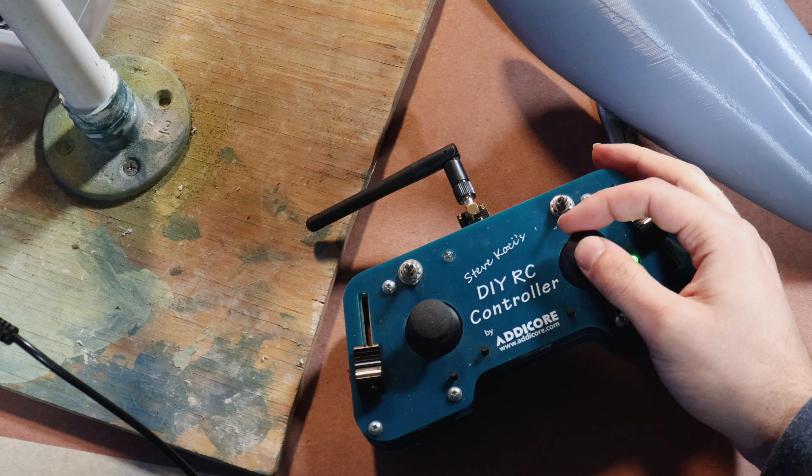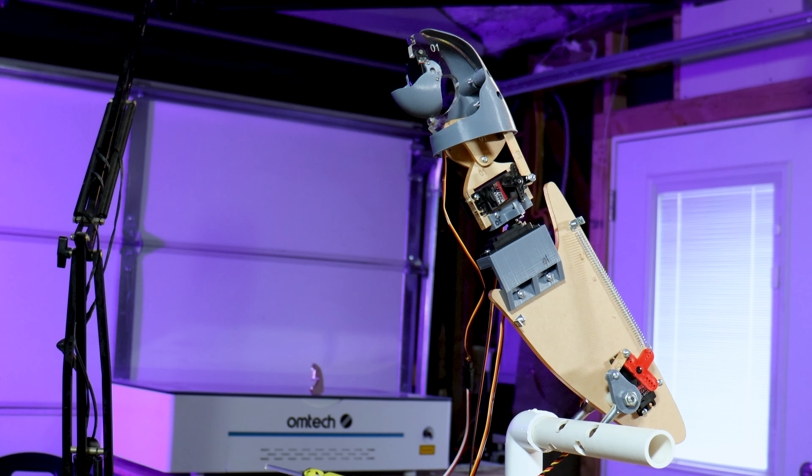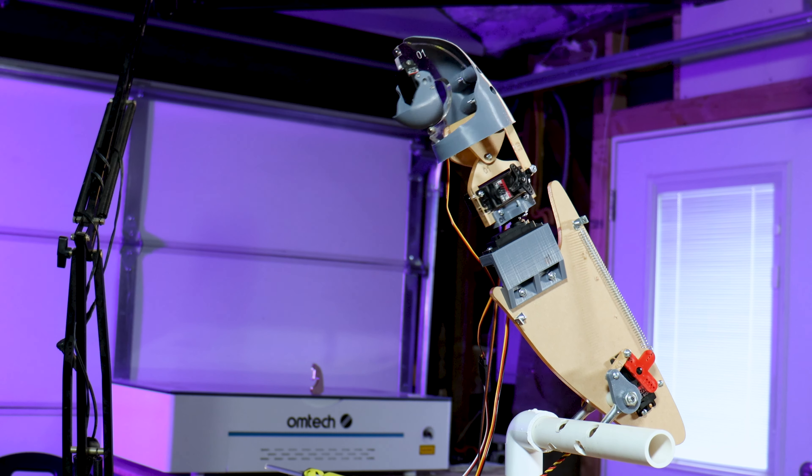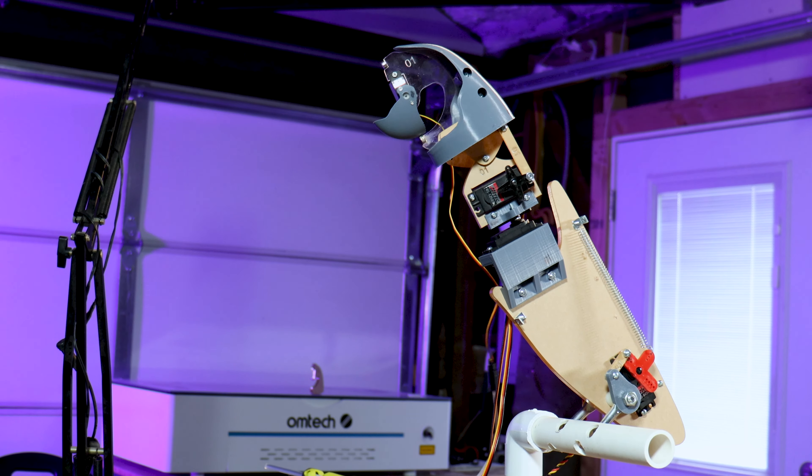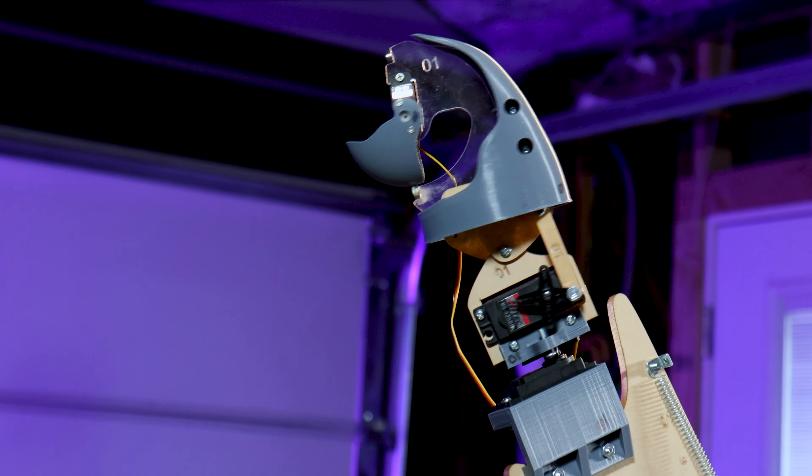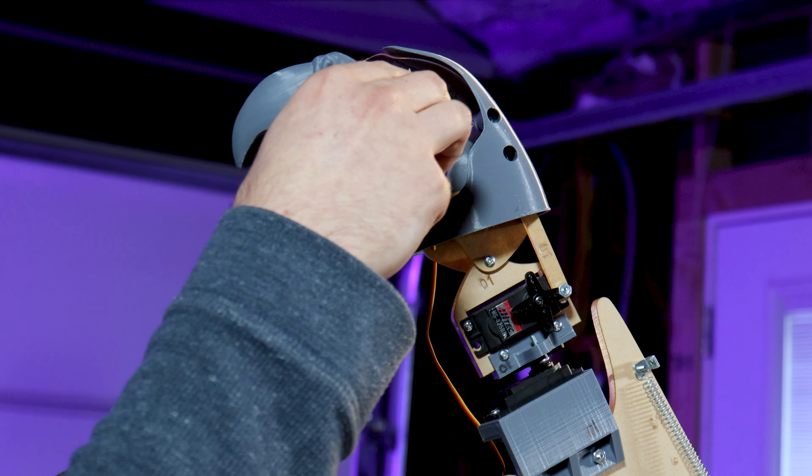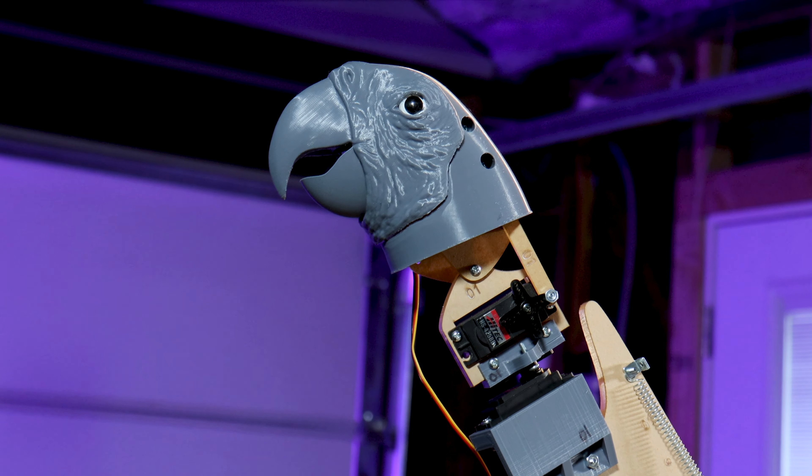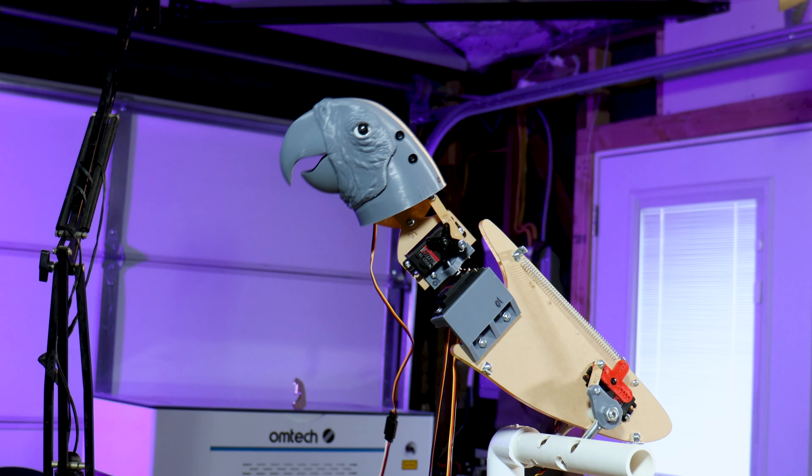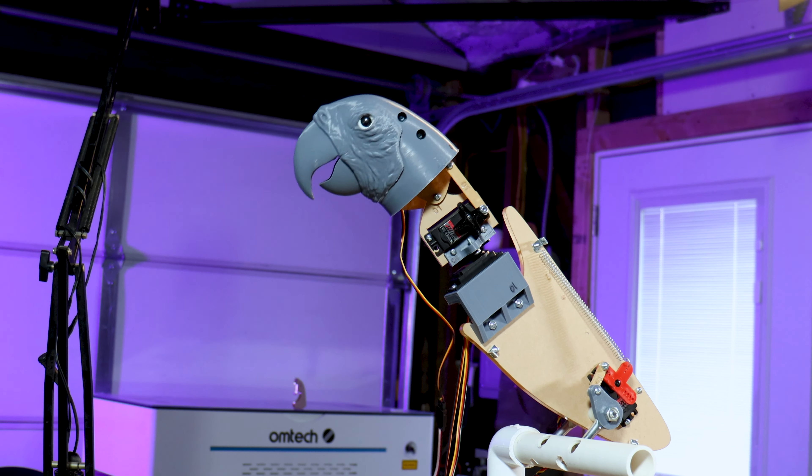I'm going to power this up and test it out with the Steve Kochi RC controller from Atacore. This is a great tool for hobbyist animatronics, and I'm going to talk about it more in a future video. But for now, this range of motion is looking pretty good. I'm going to put the face on it so you can see what that will look like. Now you can really see how the 3D printed and the laser cut pieces work together.